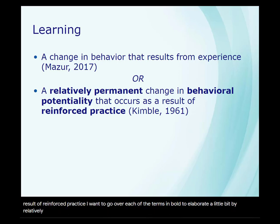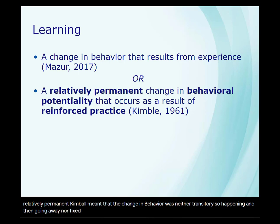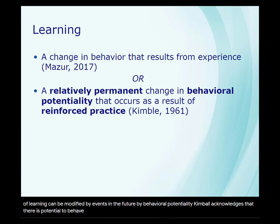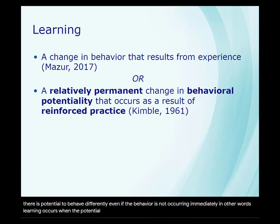By 'relatively permanent,' Kimball meant that the change in behavior was neither transitory — so happening and then going away — nor fixed, which means that forgetting does occur and that behavior resulting from learning can be modified by future events. By 'behavioral potentiality,' Kimball acknowledges that there is potential to behave differently even if the behavior is not occurring immediately. In other words, learning occurs when the potential for behavior change happens, not when you actually observe a different behavior.